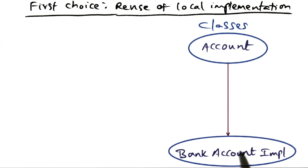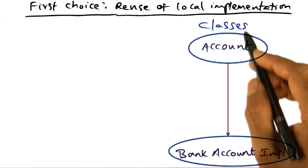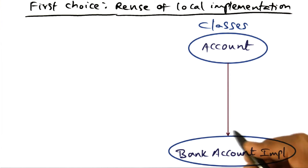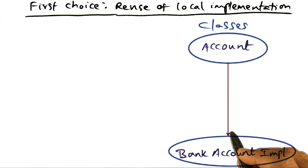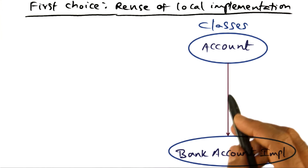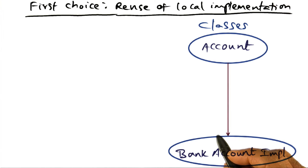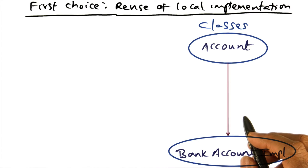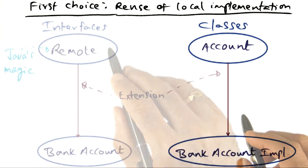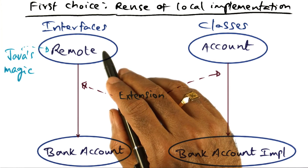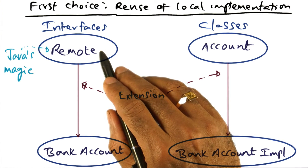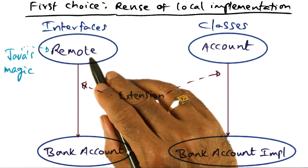She creates a BankAccount implementation. She started with a local implementation of a class Account and extended it to implement the BankAccount. Now this BankAccount service that has been created, she has to make that visible outside in the network so that any client can access it. This is where she uses the built-in class available in the distributed object model of Java, called the remote interface.